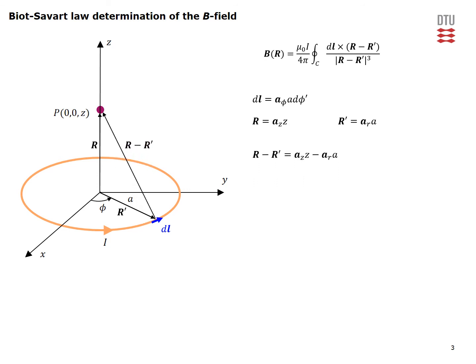The difference vector goes from the source to the observation point. It is given by the result here and you can easily form the magnitude of this vector to the power of 3 which enters into Biot-Savart law. You can also easily determine the cross product between your DL element and your difference vector.